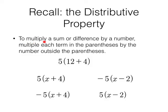So recall what the distributive property is. To multiply a sum or a difference by a number, multiply each term in the parentheses by the number outside the parentheses. So in this particular example first, right here, 5 times 12 and 5 times 4. But that's ridiculous because that's not what people do.